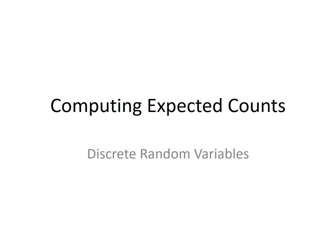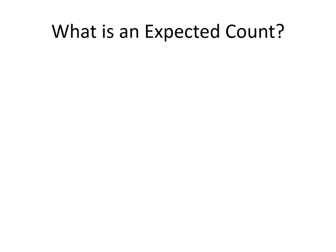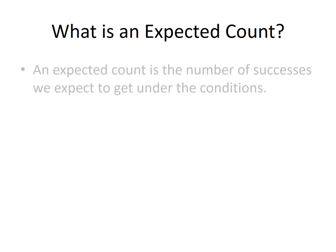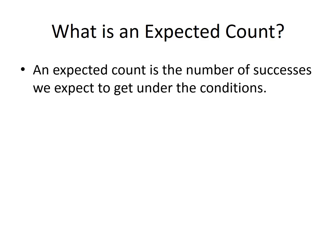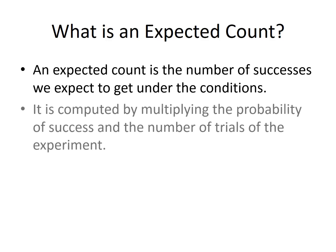Computing expected counts for discrete random variables. An expected count is the number of successes we expect to get under the conditions. It is computed by multiplying the probability of success and the number of trials of the experiment.